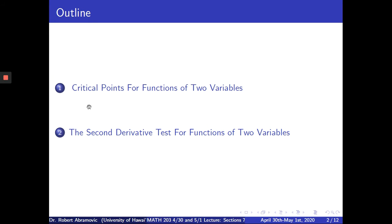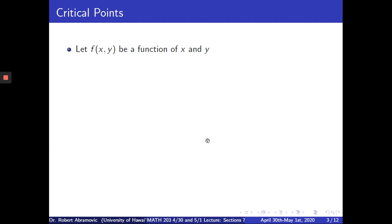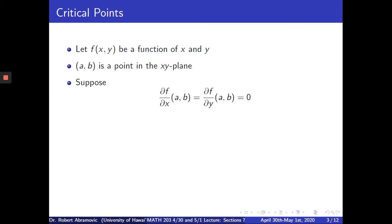We'll begin by discussing critical points for functions of two variables, and then we're going to discuss the second derivative test for functions of two variables. Let f be a function of two variables x and y, and let (a, b) be a point in the xy-plane. If the partial derivative of f with respect to x at (a, b) equals the partial derivative of f with respect to y at (a, b), and they're both equal to zero, then the point (a, b) is called a critical point of the function f.